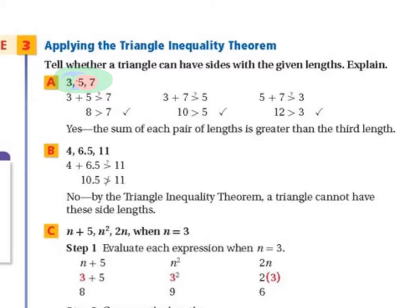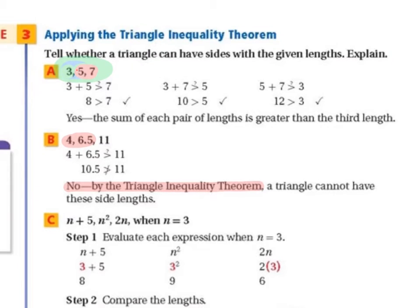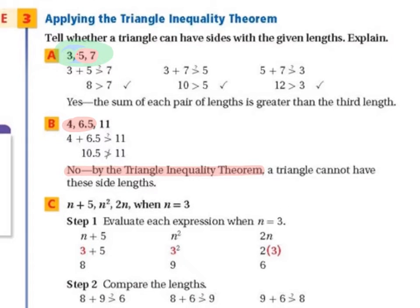For part B with sides 4, 6.5, and 11: adding 4 and 6.5 gives 10.5, which is not greater than 11. So this cannot form a triangle. If any one of the three pairs doesn't work, it doesn't work, and you don't even have to check the other two.